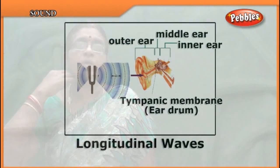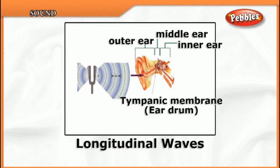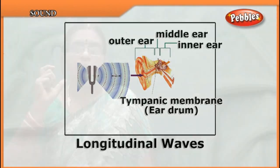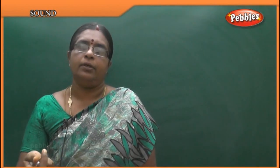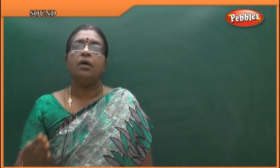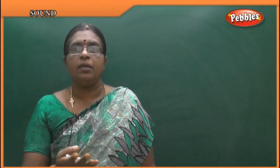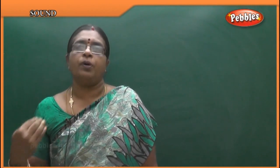Now, when sound waves travel through the air and reach us, there is a tympanic membrane in our ear. When the sound waves reach that membrane, it will start vibrating. That vibration is what we perceive as sound. So this is the propagation and how sound is produced.